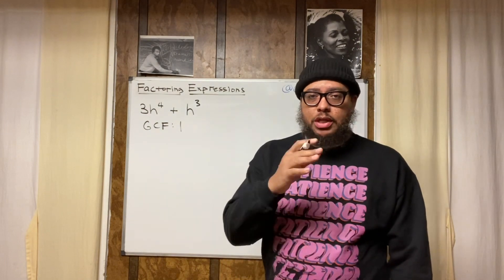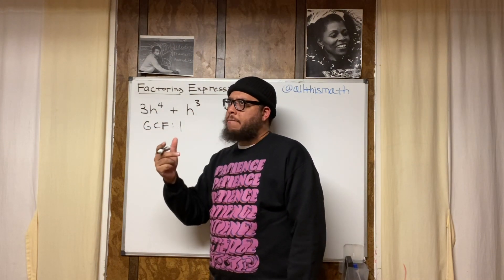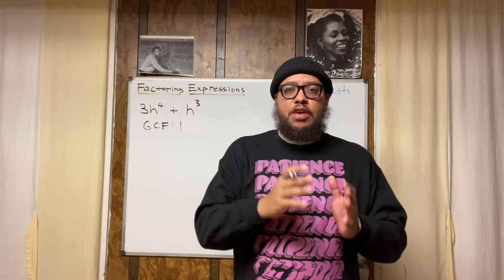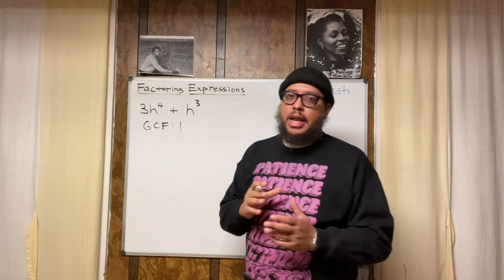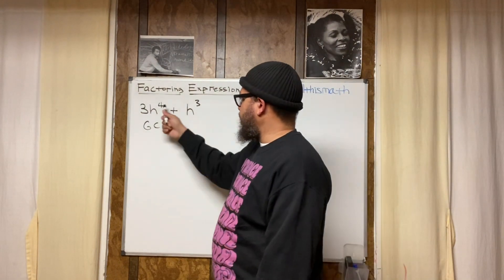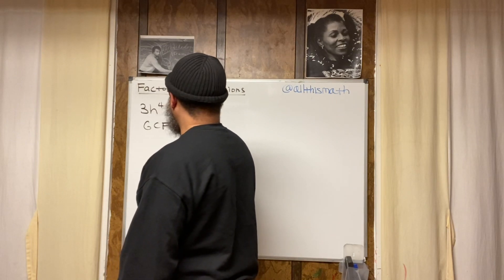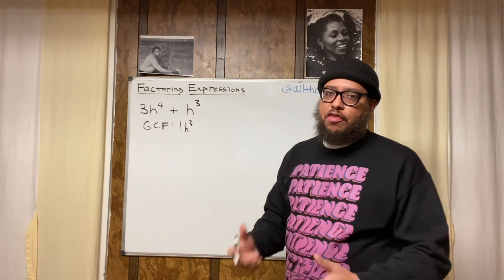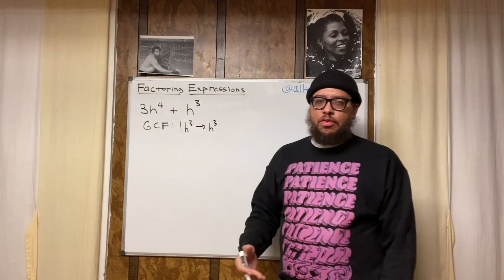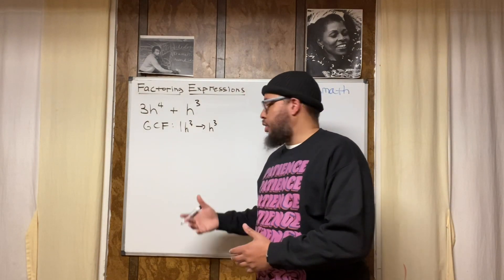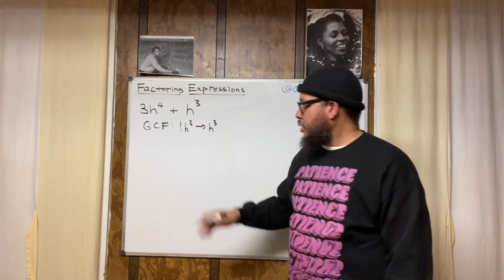Then you look at your variables. You got h to the fourth power and h to the third power. Now, when you're trying to find the GCF of variables, if you have variables that are the same — you got h and you got h, these are the same — for the GCF you take the variable that has the smallest exponent. Three is less than four, so h to the third would be the GCF of those two. So you put the one with the h to the third, giving you one h to the third. We can simplify that to just h to the third, because you never need to write a coefficient of one. So that's my GCF.